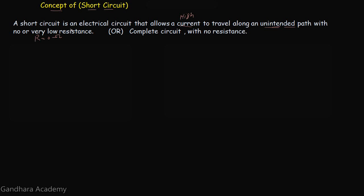There are two cases for the short circuit. The first one is the ideal case. For an ideal case, the current through the short circuit is infinite, the resistance across a short circuit is zero ohms, and the voltage across a short circuit is zero volts.